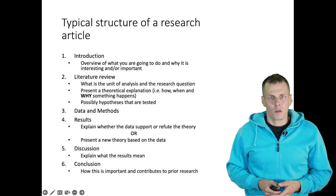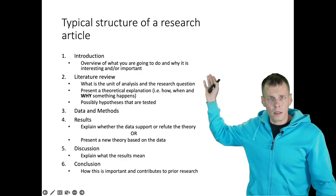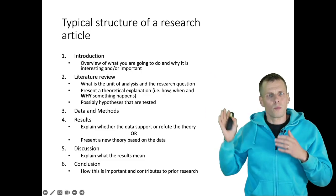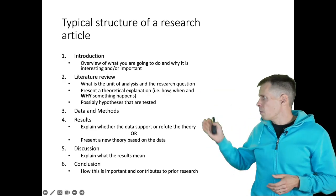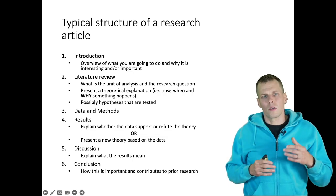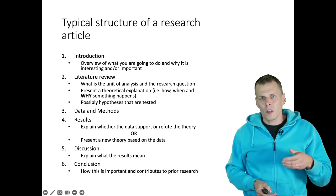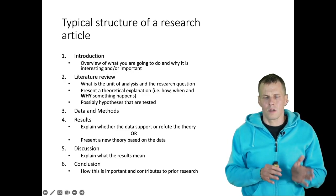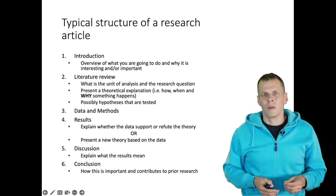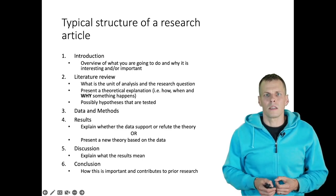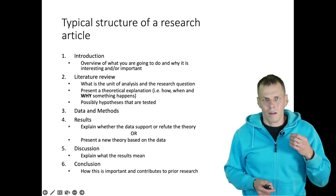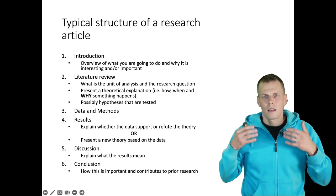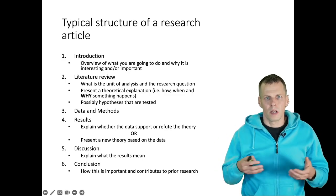This is a typical structure of a research article. The introduction tells us what the article is about, why it might be interesting, why it might be important, and typically you also find the research question here. Then we have a literature review or theory section, which typically contains citations to previous research but often also expresses new ideas. For example, in the Sapienza article, the authors claim that early international expansion increases the risk of failure but also increases the probability of growth, and the theory part explains the causal mechanism behind that reasoning.